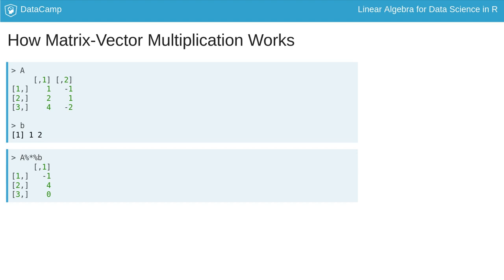Here we have the matrix a multiplied by the vector b making the vector negative one, four, zero.